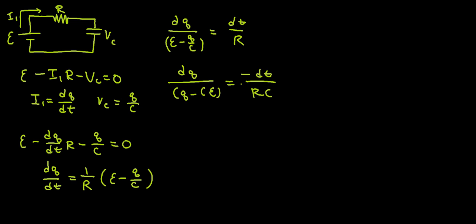Because I'm looking for a function Q of t and I know that charge is changing, I have to do an integral and integrate both sides. For the time side, we're going from 0 to t. At time t equals 0, the voltage is 0, so the charge must be 0. So we're starting at 0 for dQ and going to an arbitrary little q, because I'm looking for a function Q of t.